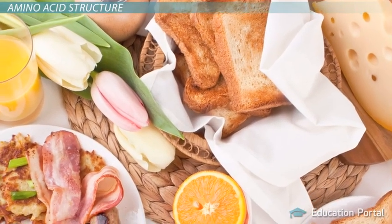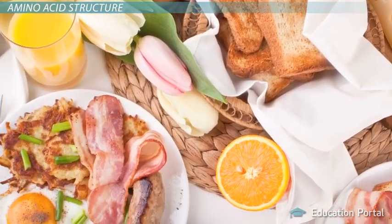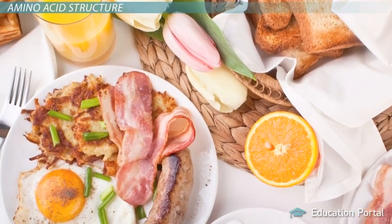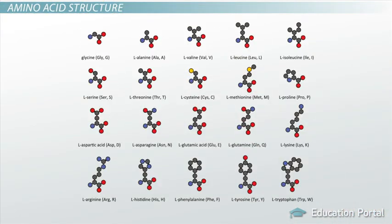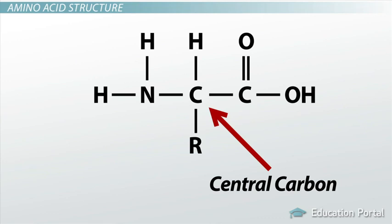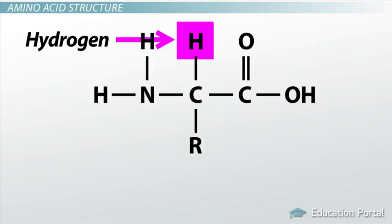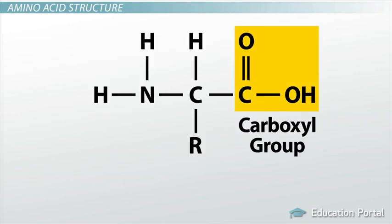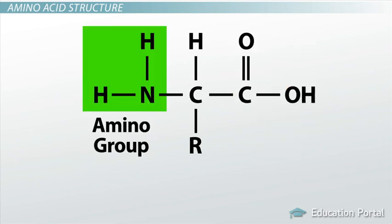Regardless of whether a protein is found in the food on your dinner plate or within your body, it is made up of a chain of amino acids. There are 20 different amino acids needed by your body. Some of them are made in your body, while others must come from your diet. All of the amino acids have the same basic structure. We see a central carbon atom, represented by the letter C, bonded to four different components. We see a hydrogen atom, represented by the letter H. We also have a carboxyl group, which is the COOH seen here,